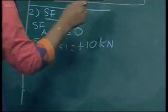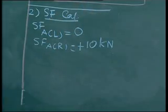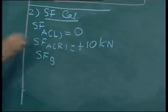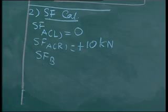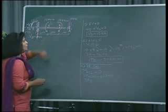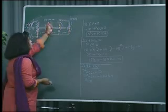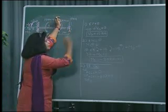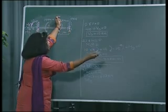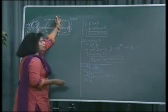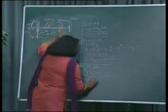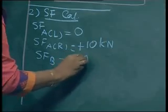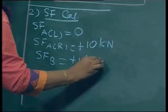Then we come to shear force at point B. Now what is B? B has a couple moment. So put your hand on point B and see on the right side — only 10 kilo Newton force. So we can show plus 10 kilo Newton.